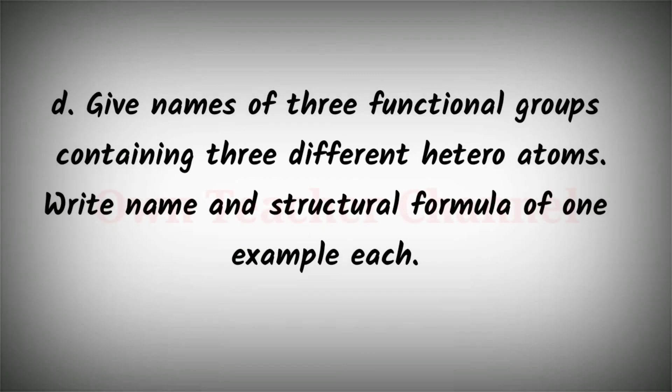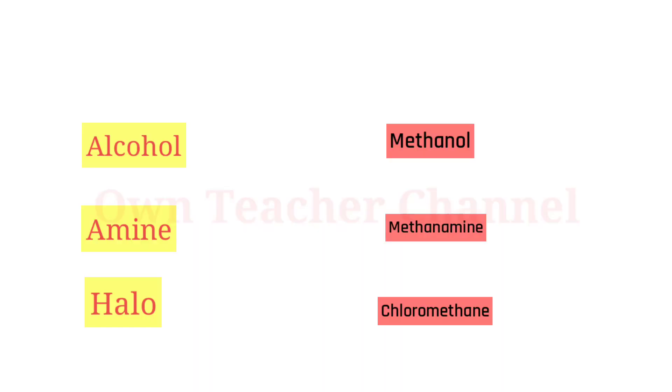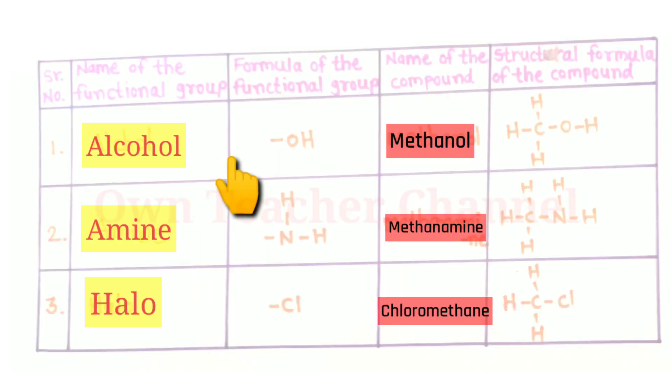D: Give names of three functional groups containing three different heteroatoms. Write name and structural formula of one example each. Name of the functional group: alcohol. This is formula of functional group. Compound is methanol, and this is structural formula of the compound. Name of the functional group is amine. Compound is methanamine, and this is structural formula of compound. Name of functional group is haloalkane. This is formula of functional group. Compound is chloromethane, and this is structural formula of the compound.